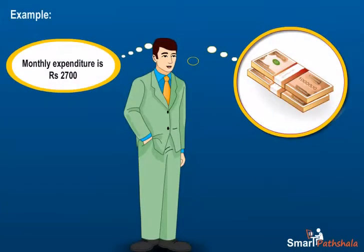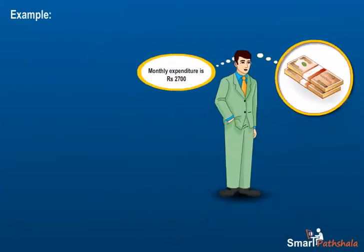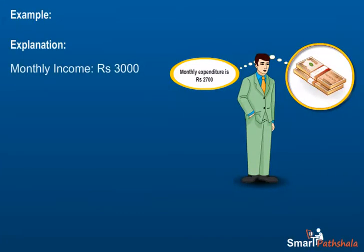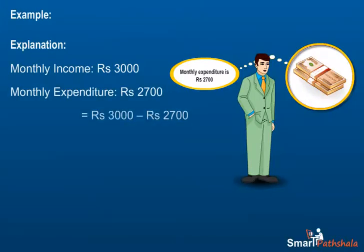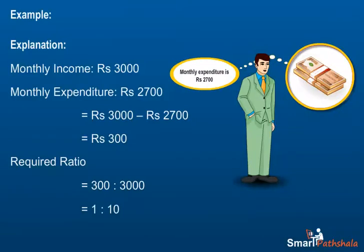Example: Ravi earns rupees 3000 per month. If his monthly expenditure is rupees 2700, his monthly saving is rupees 300. Now the ratio of his saving to his income is equal to 300 upon 3000 which is equal to 1 is to 10.